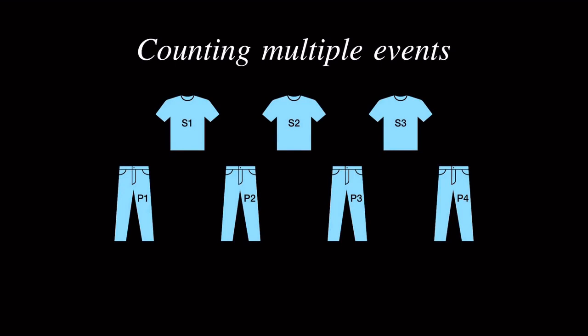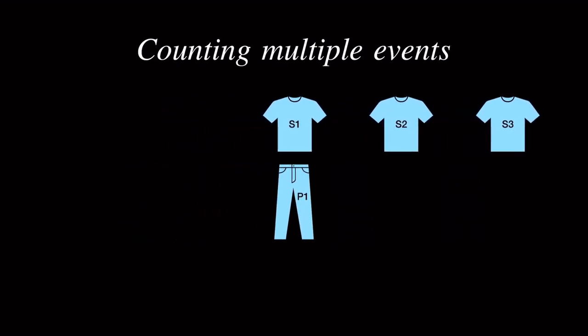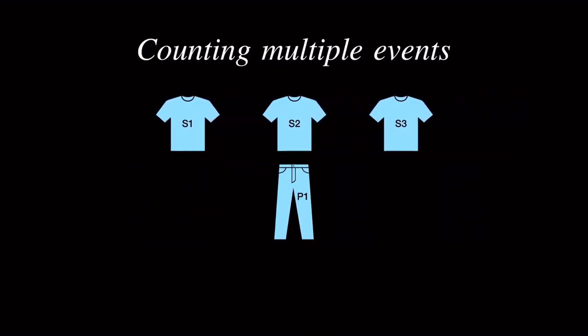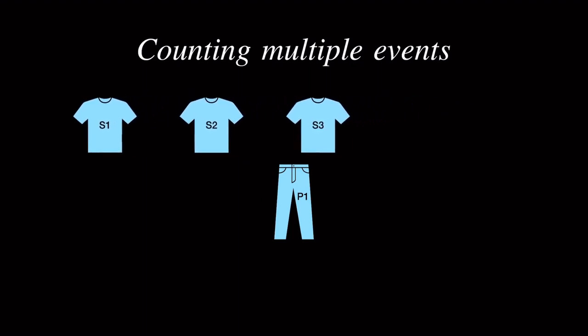First we label the three shirts S1, S2, S3, and the four pants P1, P2, P3, and P4. For pants P1, we have three possible choices: S1 P1, S2 P1, and S3 P1.